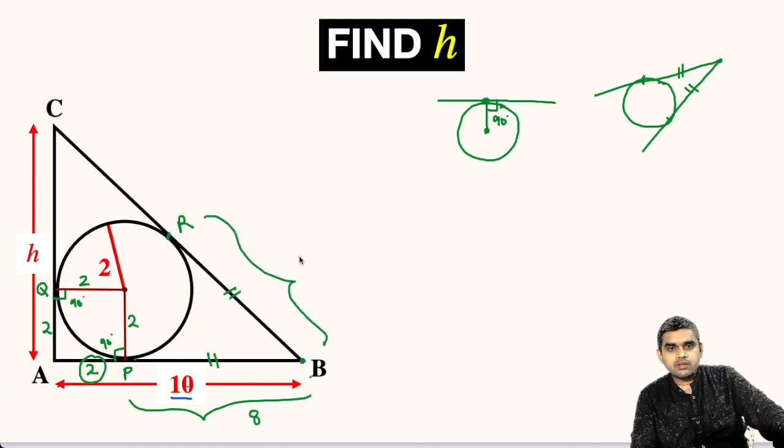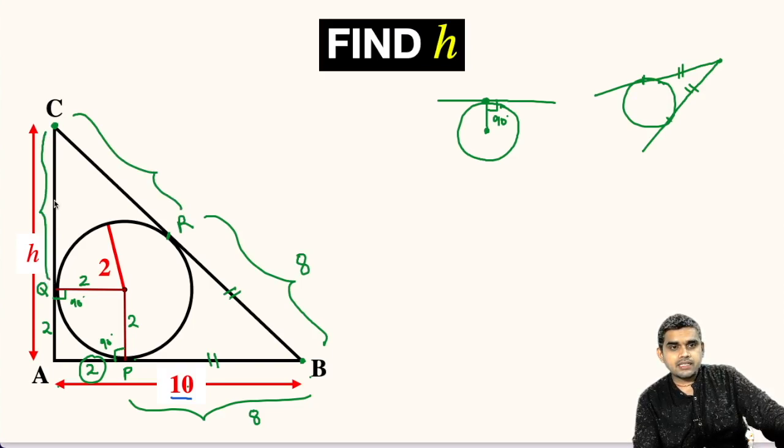Similarly, BR will also be equal to 8 units. Now, we will apply the same theorem here also. Point C is the external point, and CR will be one tangent, likewise CQ will be another tangent, and they are equal in length.